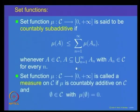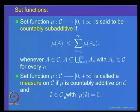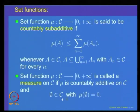A set function mu is called a measure on C, where C is a collection of subsets, if mu is countably additive, the empty set belongs to C, and mu of the empty set equals 0. So mu is defined on a collection C, the empty set belongs to C, mu of the empty set is 0, and mu is countably additive on this collection. Such a set function is called a measure on C.